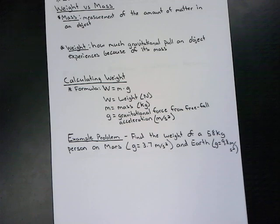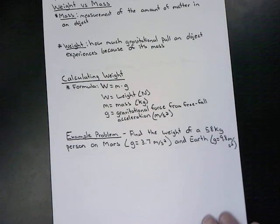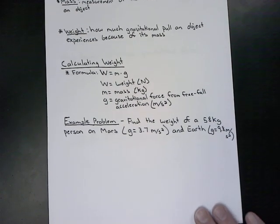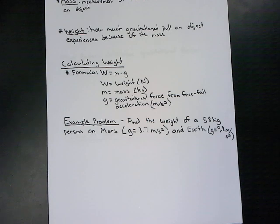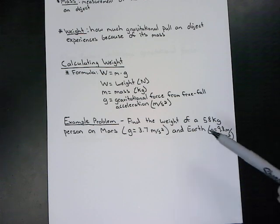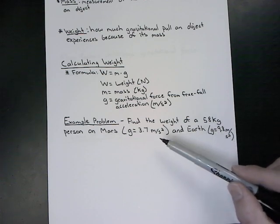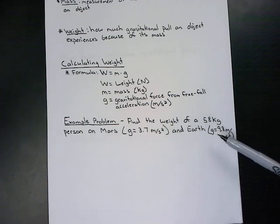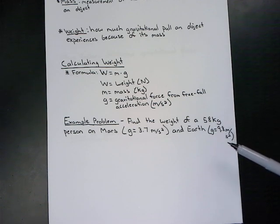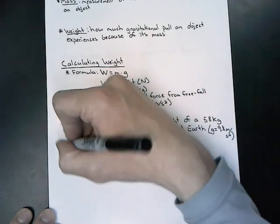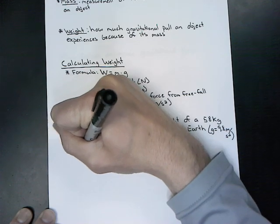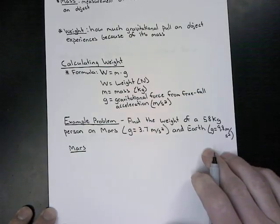To emphasize this point, we are going to perform some calculations. We want to find the weight of a 58-kilogram person both on Mars and on Earth. On Mars, the gravitational pull is 3.7 meters per second squared, and on Earth that gravitational pull is 9.8 meters per second squared. So this is going to be two different problems: a Mars problem and an Earth problem.